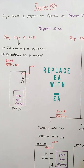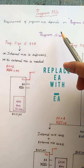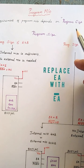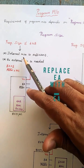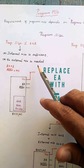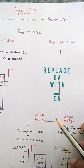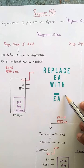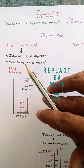Regarding program memory requirements, the need depends on the program size. If the program size is less than or equal to 4KB, the internal memory is sufficient and no external memory is required. When the program size exceeds 4KB, we must choose external memory.